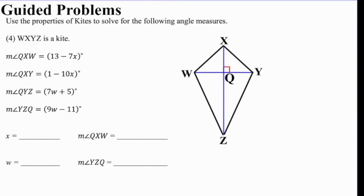And this last problem uses properties of kites to solve for the angles in the drawing. And we see that angle QXW, QXW is talking about this angle right here. We start at Q, we go up to X, and we get to W. We use the middle letter to identify the angle. That angle is 13 minus 7x. Then we have QXY, from Q to X to Y, would be identifying this angle right here. So I'll color that in. QXY is 1 minus 10x. And from our properties of kites, we understand that these two angles are equal. So we can write our equation as 13 minus 7x is equal to 1 minus 10x.